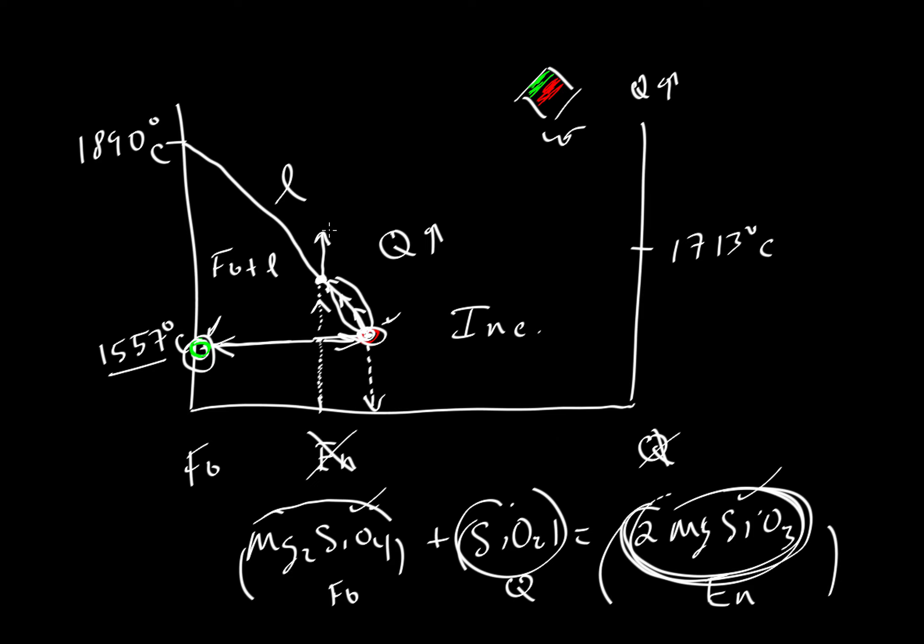Eventually we get to something that is liquid and is equal to MgSiO3. But that path was very indirect, very incongruent, we would say, using that geometrical language analogy. So that's what we mean by incongruent melting.